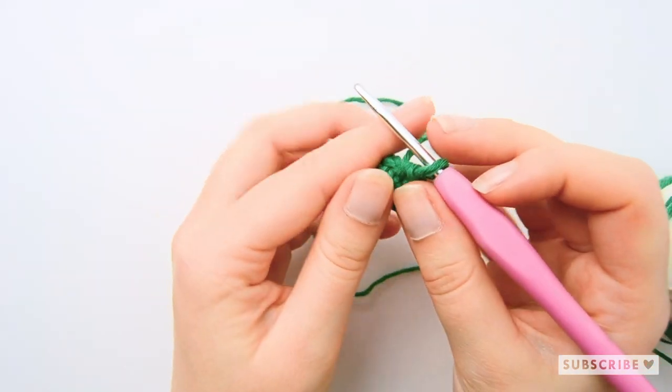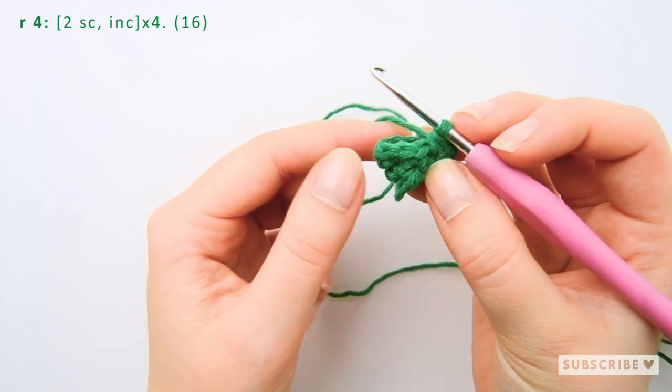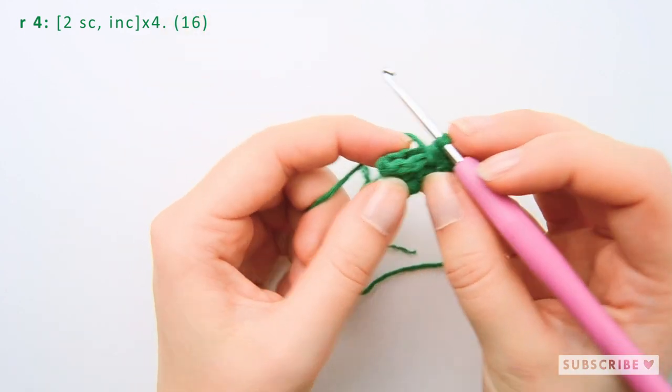On row number four we are going to crochet two single crochets, one increase and repeat this four times until we have 16 stitches.